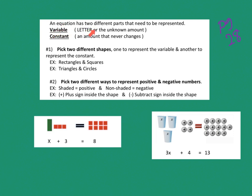A variable is a letter or an unknown amount — I'm going to highlight that because we need to know what a variable is. Variables are the letters. Then constants are numbers — an amount that never changes. A constant is a number without a letter; it does not have a letter with it.